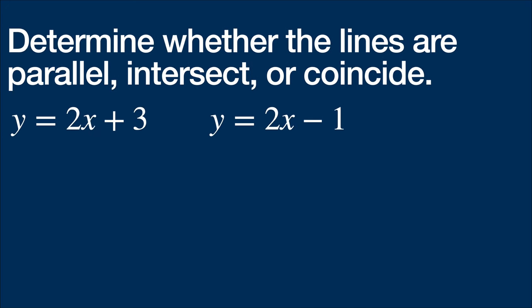So now we need to determine whether the lines are parallel, intersect, or coincide. So let's look right here. So these are lines that have the same slope but different y-intercepts, meaning they do not coincide, but they are parallel.